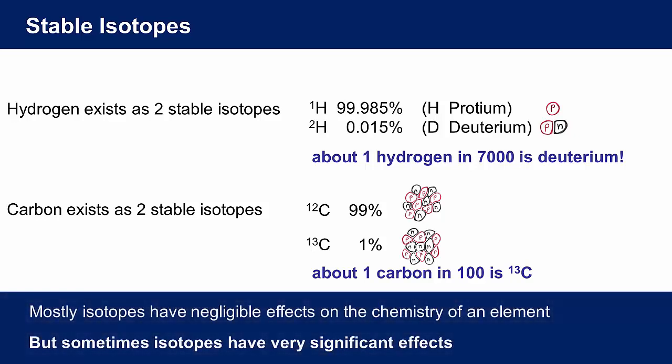For the most part, the chemistry of an element is determined by the electronic structure of its atoms, which in turn is determined by the electrostatic potential caused by the protons in the nucleus. Different elements have different numbers of protons, giving different electrostatic potentials, resulting in different electronic configurations and different chemistry. Different isotopes of the same element have the same number of protons, giving them the same electrostatic potential, resulting in the same electronic configuration and the same chemistry.